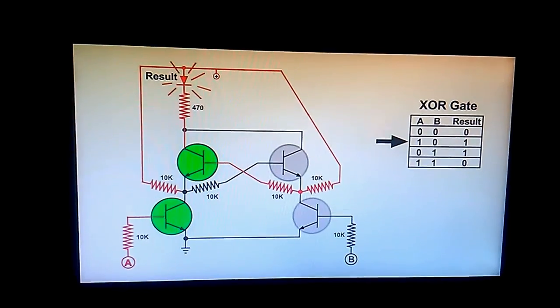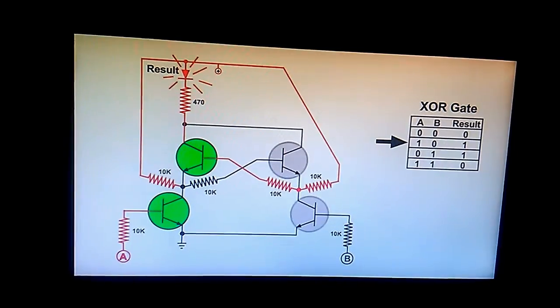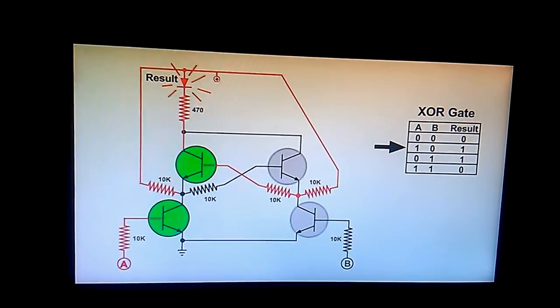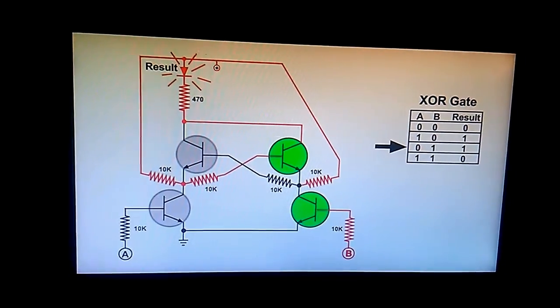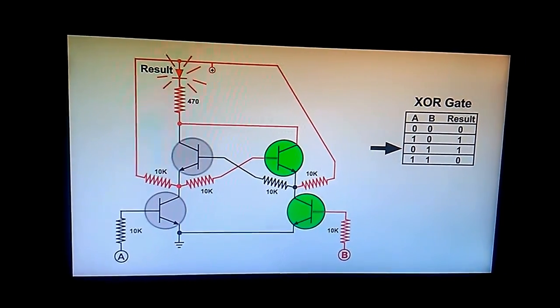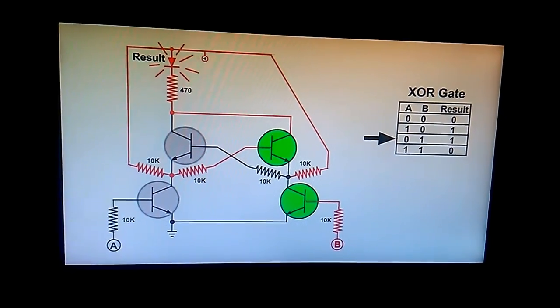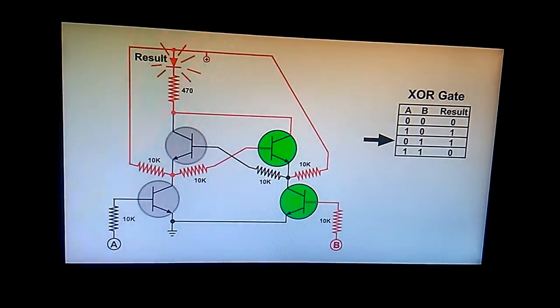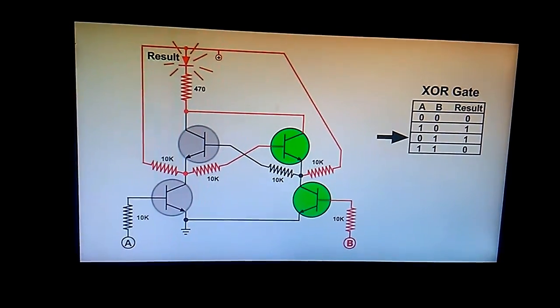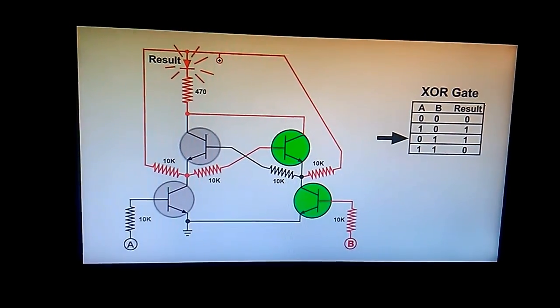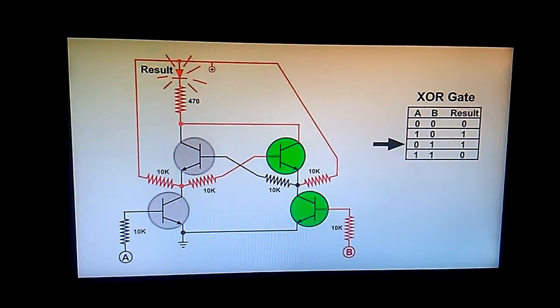Now when I take the signal off of A and put it on B, the right bottom transistor is shorting out the bias for the upper transistor on the left. But we now have a path of current through the bottom right transistor and the left transistor, and the LED is lit.